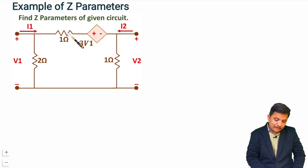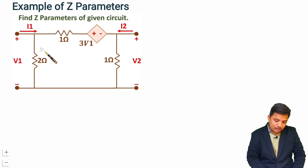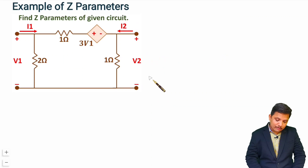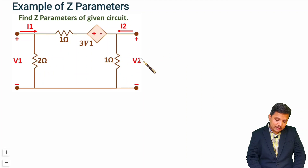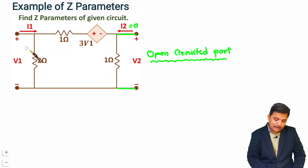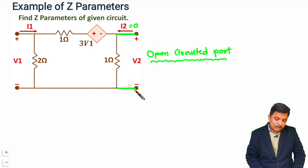If you have a simple T network or pi network, you can directly calculate Z parameters by solving two equations. But this network is a bit complex, so we need to follow the standard process. First, we keep port 2 open circuit, making I2 equal to 0. Then V2 by I1 gives Z21 (forward transfer Z parameter) and V1 by I1 gives Z11, the input impedance. After that, we open circuit port 1, making I1 equal to 0, and calculate V1 by I2 (Z12, reverse transfer impedance) and V2 by I2 (Z22, output impedance).